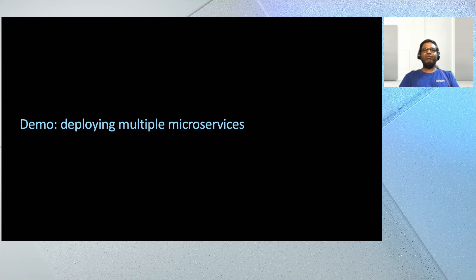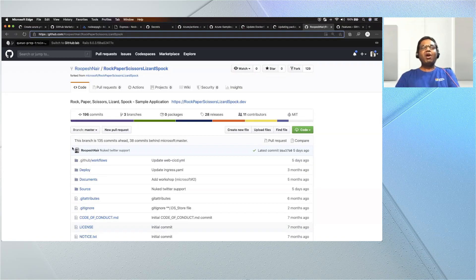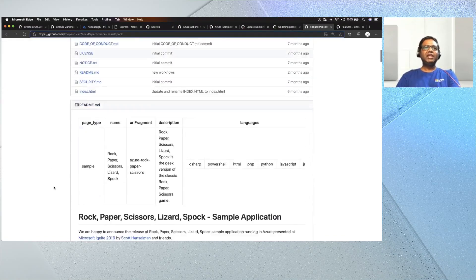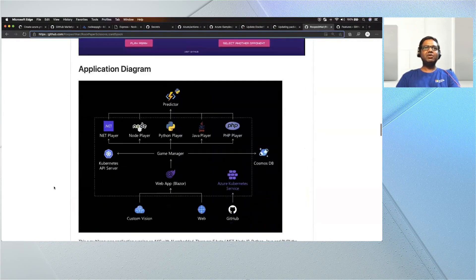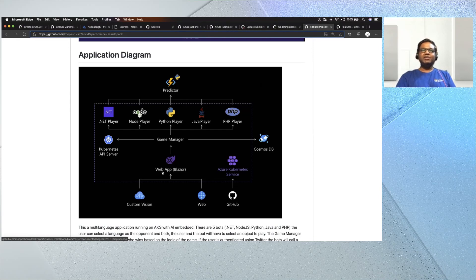Switching back to the presentation — what I have shown is taking a simple application through a simple CI/CD end-to-end workflow into multiple shift-left strategies, starting from pull request to approvals, running tests, and making sure every deployment is secure and safe. The next thing I want to show: what we've seen is a single microservice getting deployed. What if you have multiple microservices in your application? Here we have a Rock, Paper, Scissors app. Let me show you the architecture. There are many microservices available, each built in a different language. This app uses Azure Functions for prediction, Cosmos DB, Web App Blazor, and all these microservices are deployed to Azure Kubernetes Service.